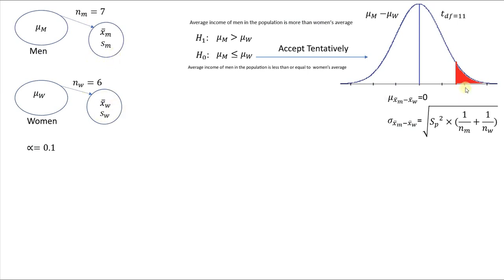...basically if we see that the difference between men and women is positive, and men are earning more than women — very far from the claim that they are equal — then we should accept that we reject the null hypothesis. So if this red area happens, we will reject the null hypothesis.